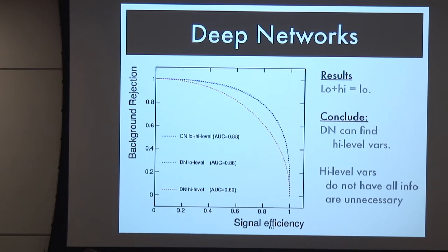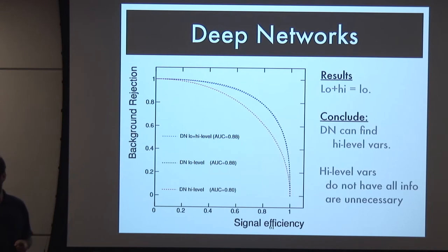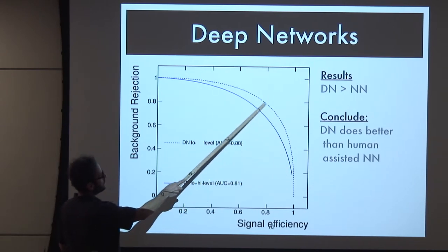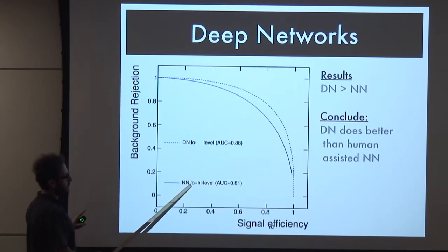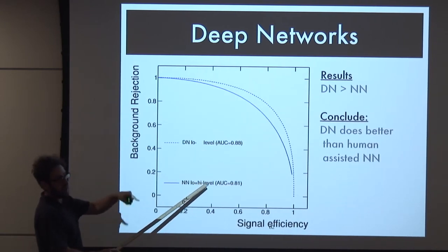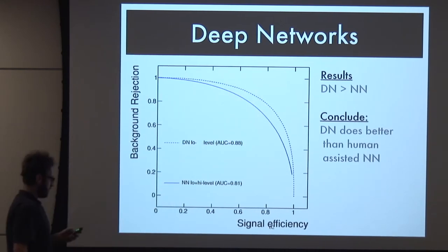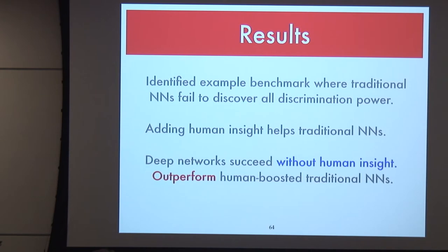We tried several depths, starting with two layers and increasing until performance plateaued - four layers were not the limit; people today train networks of 50 or 100 layers. Direct comparison: the deep network with no physics clues, just low-level information, outperforms the best shallow network even when that shallow network was given both low-level information plus physics clues. What we've done is identified an important benchmark where traditional networks fail to discover all the discriminating power.